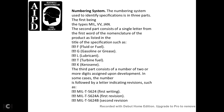Specification numbering consists of three parts. The first part is the type prefix: MIL, federal (VV), or JAN for joint Army-Navy. The second part is a single letter representing the first letter of the product nomenclature, such as F for fluid or fuel, G for gasoline or grease, L for lubricant, T for turbine fuel, and K for kerosene.